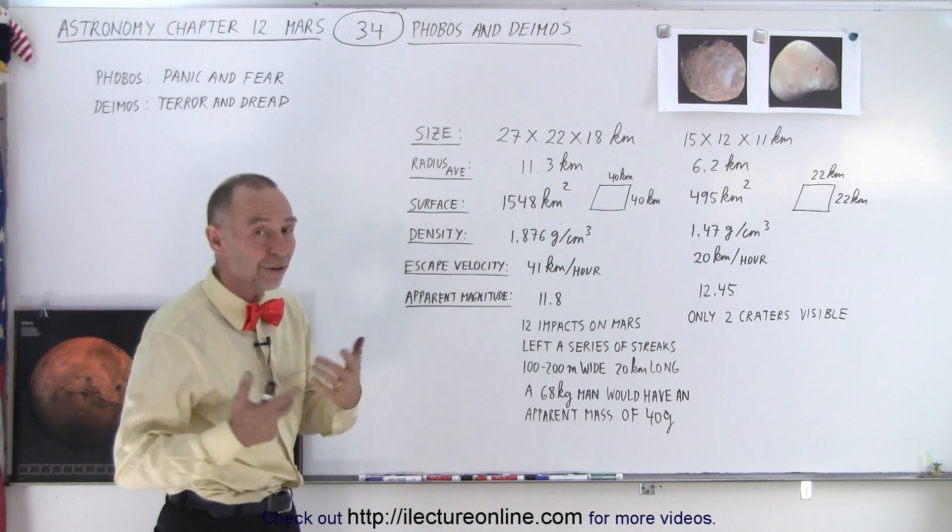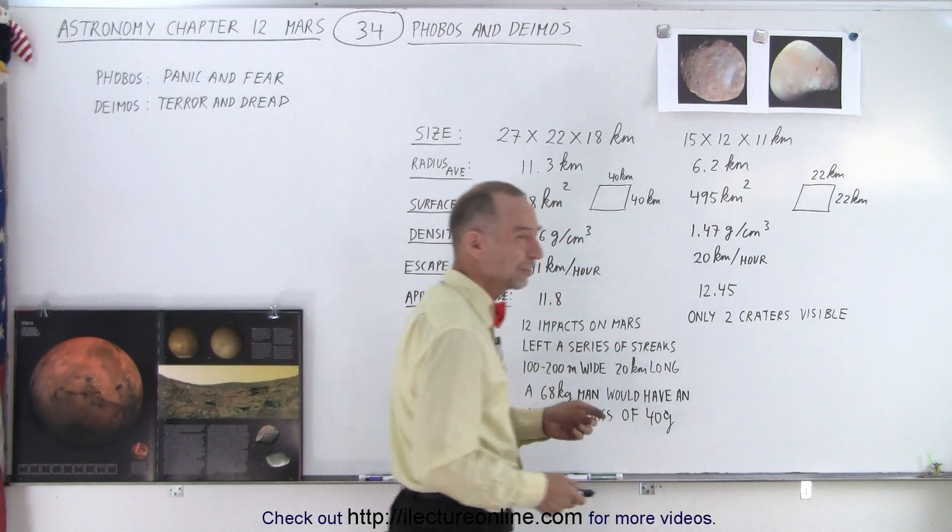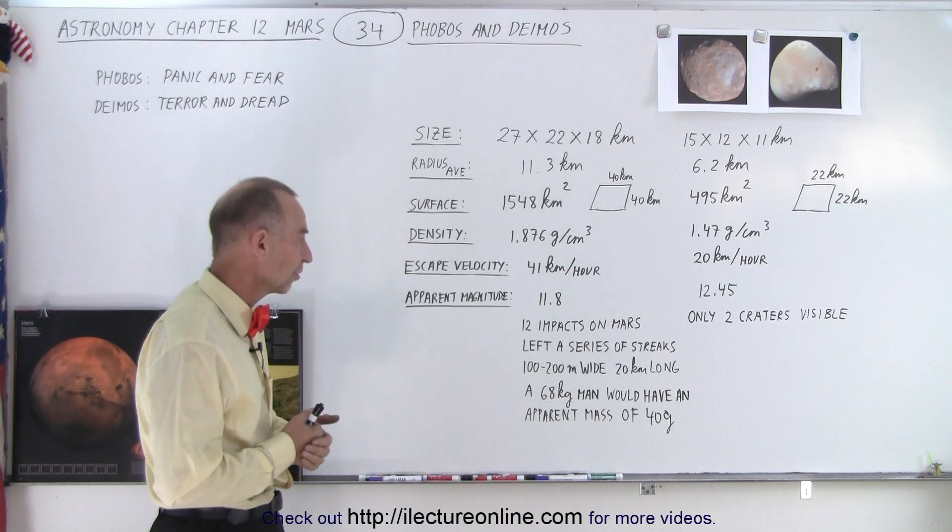The apparent magnitude as seen from the Earth is 11.8 for Phobos and 12.45 for Deimos, so there's no way you can see those with the naked eye from here—you need a fairly good size telescope.